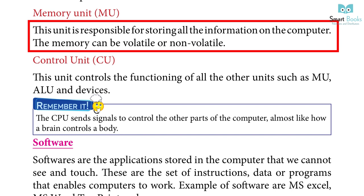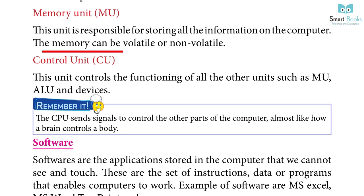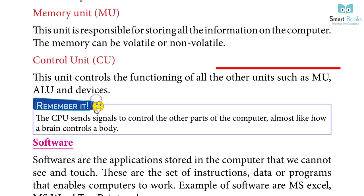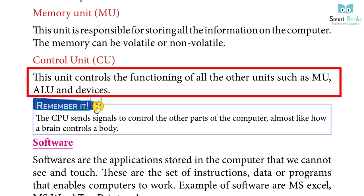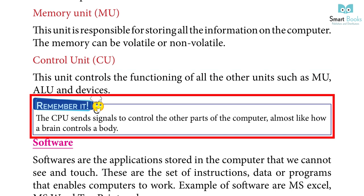Memory Unit (MU): The memory can be volatile and non-volatile. Control Unit (CU): This unit controls the functioning of all other units such as MU, ALU and other devices. Remember: The CPU sends signals to control the other parts of the computer, almost like how a brain controls a body.